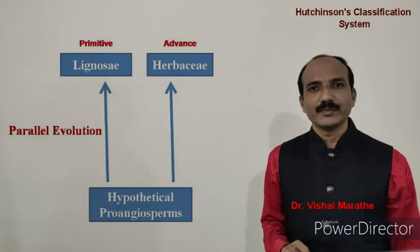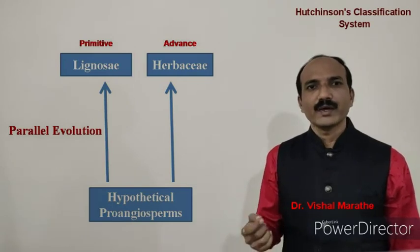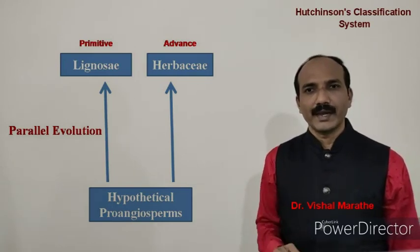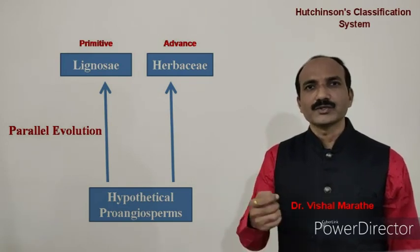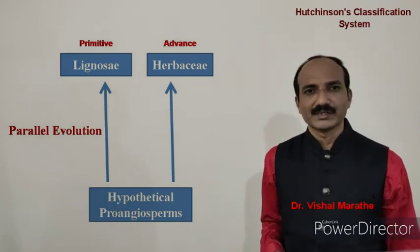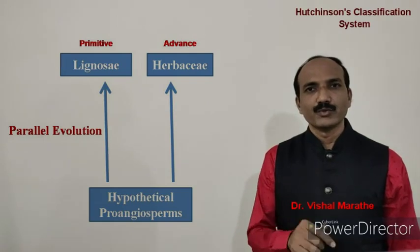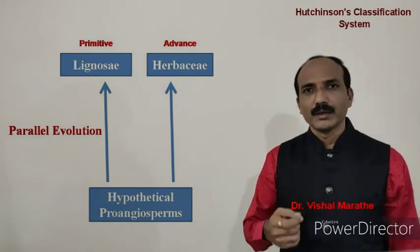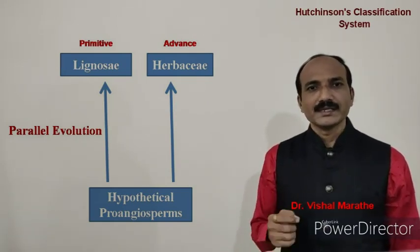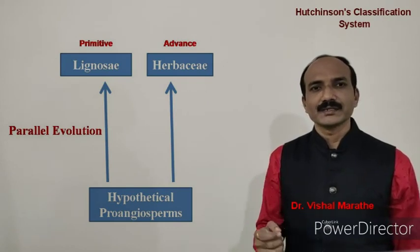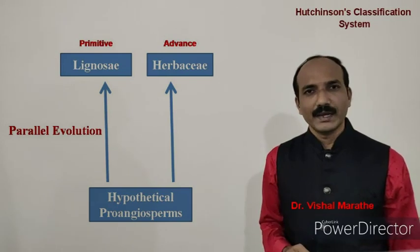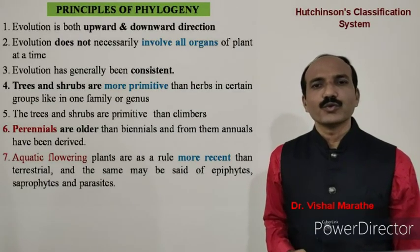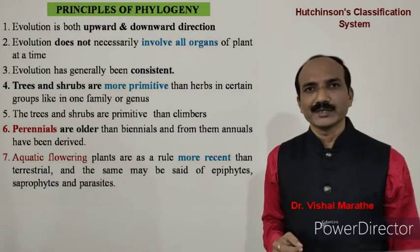Hutchinson's system was one of the most influential revisions of taxonomy in the early 20th century. A key feature of his classification is that angiosperms were classified on the basis of habit of the plant, namely Herbaceae and Lignosi. He considered two lines of evolution based on whether wood is present or not in the plants. He is known for his 24 dictas or principles of the classification of flowering plants.